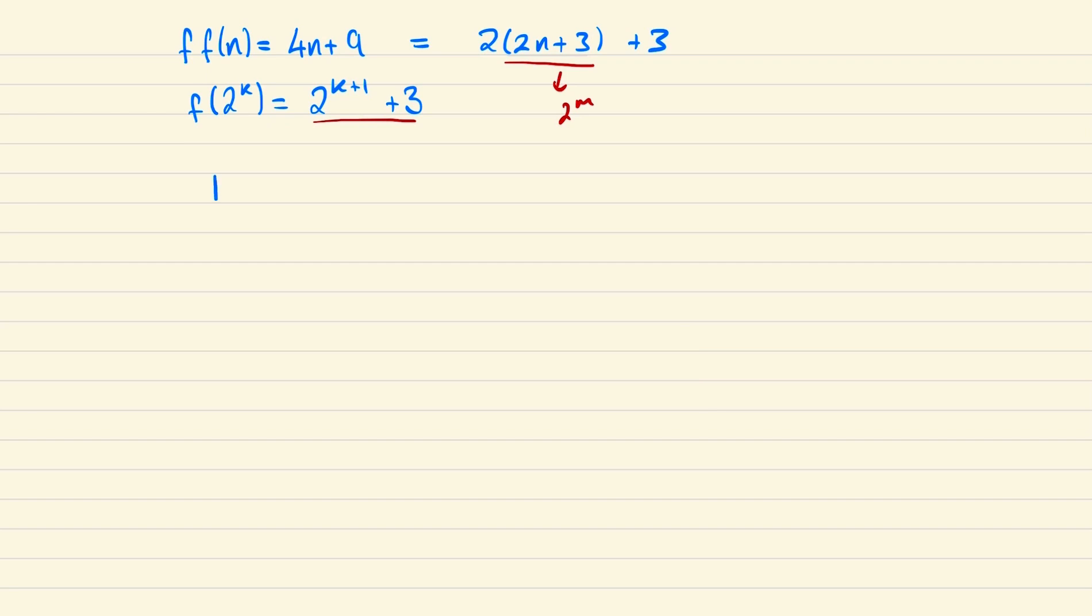So noticing that 1789 can be written as 2 lots of 893 plus 3, and that 893 can be written as 2 lots of 445 plus 3.